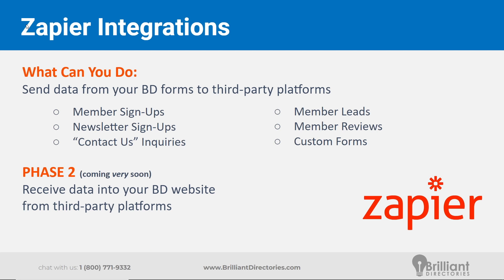Before we get into the nitty gritty details, some basic overview about Zapier integrations and webhooks in general. Right now you can send data from forms on your Brilliant Directories website out to third-party platforms via webhooks and platforms like Zapier. This includes new member signups, newsletter signups, contact form submissions, new leads, member reviews, and any custom forms on your website. The main theme is: when somebody submits a form, you can capture that data and send it out to a third-party platform.